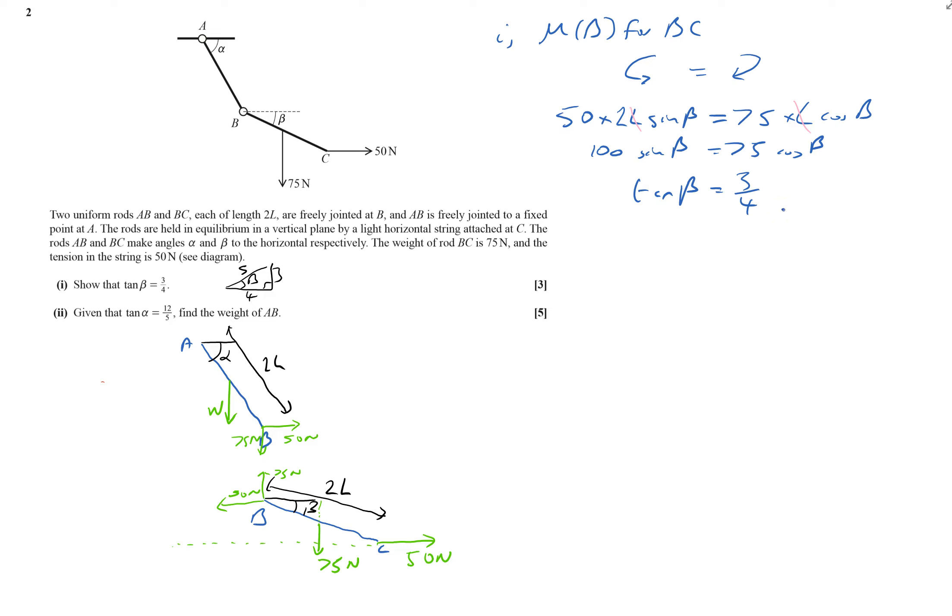And now given that tan alpha is 12 fifths, so I'll draw in a picture there. That means it's, that's my beta there. And that's going to be 12. And that's going to be 5. Opposite over adjacent. And that's 5, 12, 13 triangle.